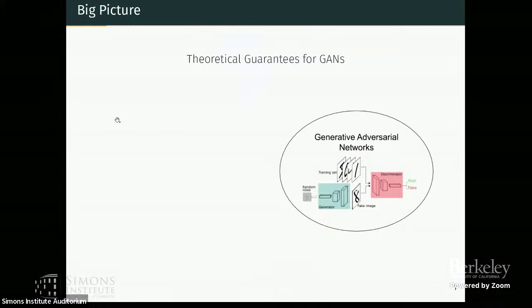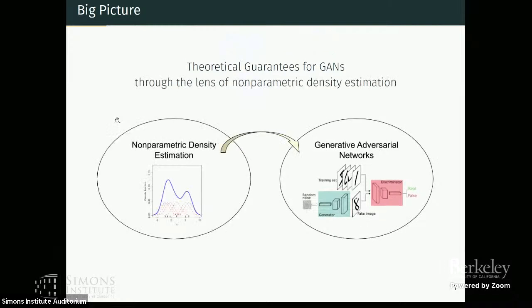So my work is primarily statistical, but I'm interested to be a part of this program to learn the other side of the story. What we did was we wanted to understand theoretical guarantees for GANs, which are notoriously hard to get, and we wanted to do this purely from a statistical standpoint. We wanted to look at this through the lens of nonparametric density estimation.